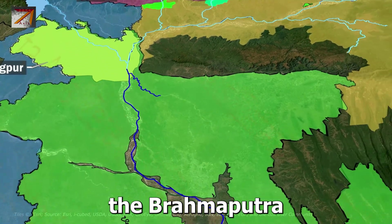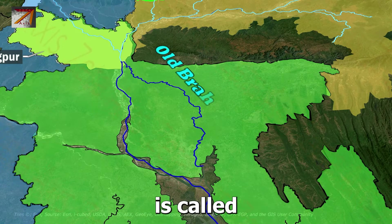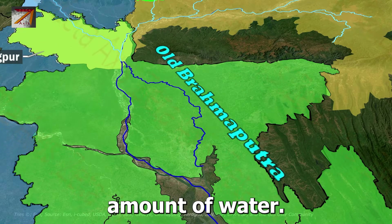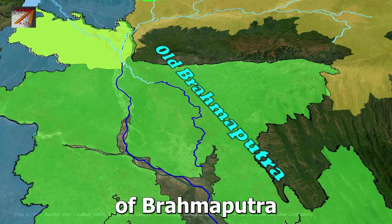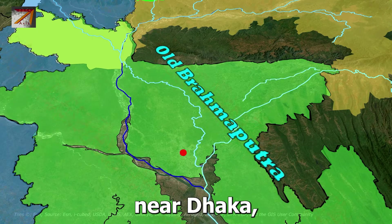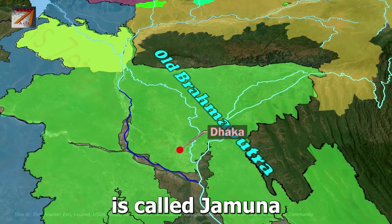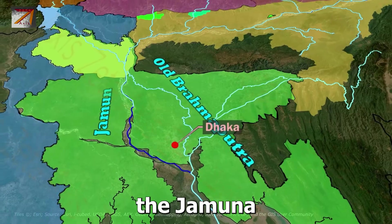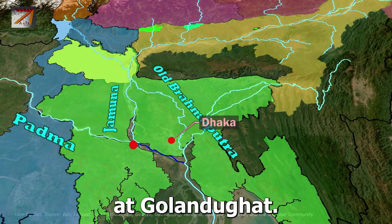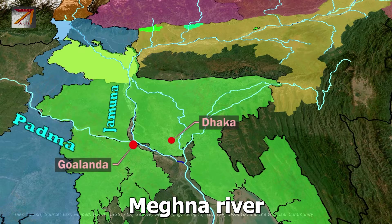After the merger of Tista, the Brahmaputra River splits into two branches. The eastern branch, called Old Brahmaputra or Lower Brahmaputra, carries very little water and flows southeast to join the Meghna River near Dhaka. The western branch, which carries most of the water, is called Jamuna. The Jamuna flows southward and meets the Ganga River — called Padma in Bangladesh — at Goalundo Ghat. The Padma then meets the Meghna River at Chandpur.